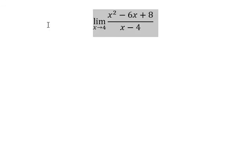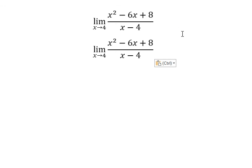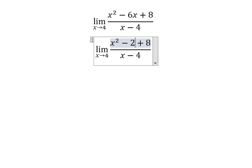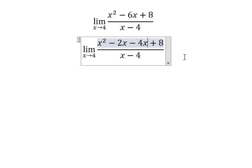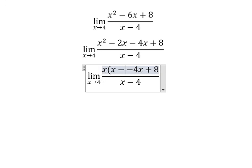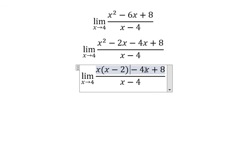Question number two: we need to do factorization here. I will put negative two x and negative four x. We have x and x — we can do factorization. Negative four and positive eight — we can do factorization by negative four.